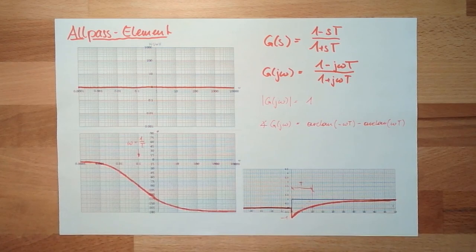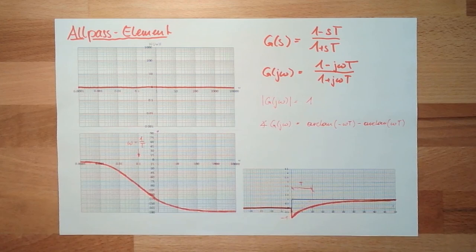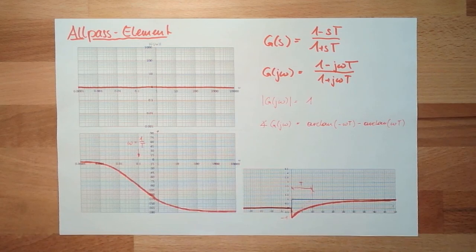Next time we're talking about a very close relative to the first-order delay system. We're going to discuss a second-order delay system — a system with two memory elements or two elements which can store energy: the PT2 element. That will be our next and final element. Thank you very much for listening — goodbye!